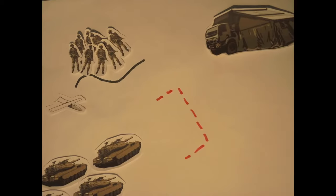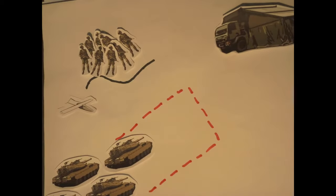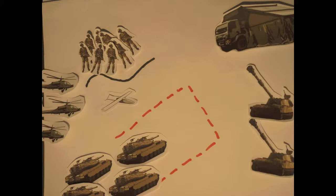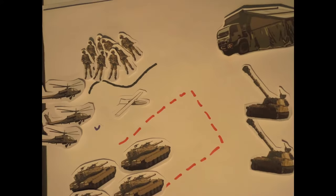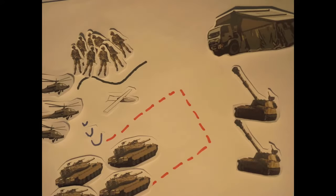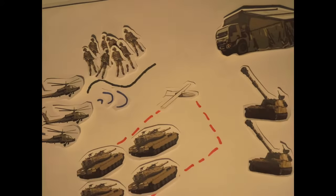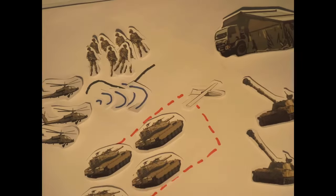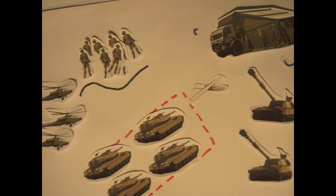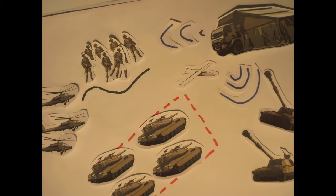A kill box is identified for the integrated strike to take place and the Apache helicopters are activated. The lead Apache detects the targets using its radar system and relays the information to the other Apaches and HQ. HQ orders commencement of the integrated strike.